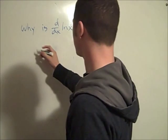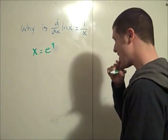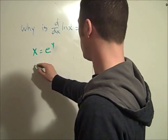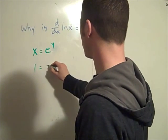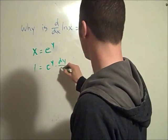Alright, so x equals e to the y. Differentiate this implicitly. We have 1 equals e to the y times dy dx.